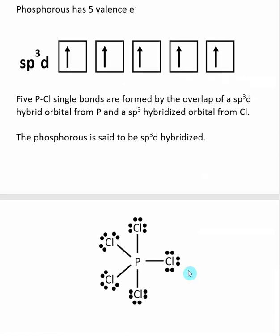When we look at the Lewis structure, we can see that our central phosphorus has 5 bonds. It has a trigonal bipyramidal shape, and the phosphorus is said to be sp3d hybridized. In this case, the chlorines have 4 electron groups, so they are sp3 hybridized, and so these PCl bonds are formed by the overlap of an sp3d hybrid orbital from phosphorus and an sp3 hybridized orbital from chlorine.